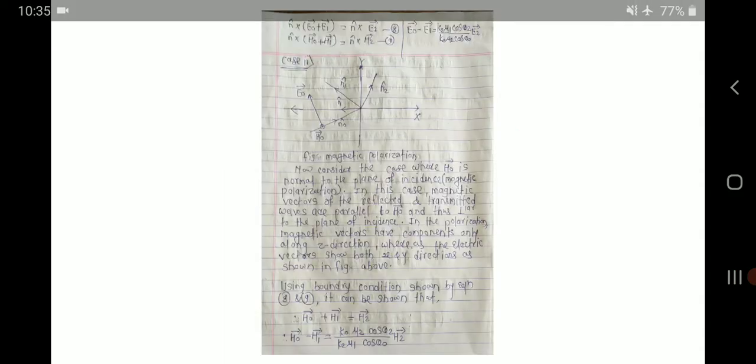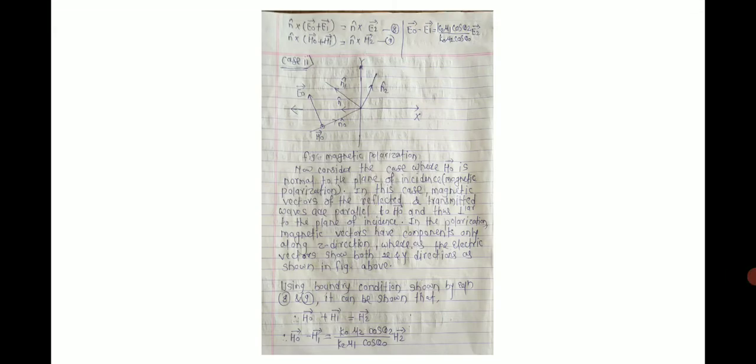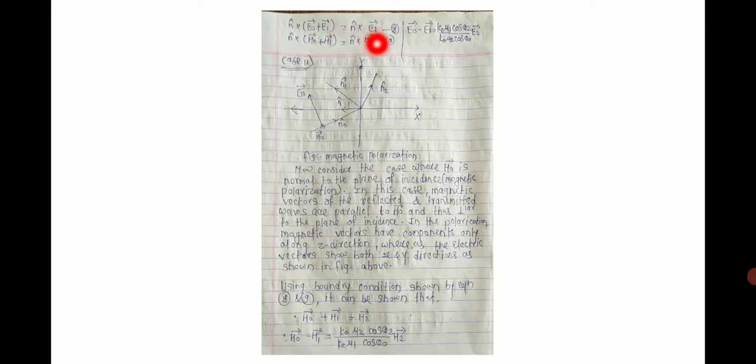In this video, we will discuss the next case — case 2, which is perpendicular polarization — and we have to find H0, H1, and H2. Let's see case number 2. First, let's recall the two boundary condition equations: equation number 8 and equation number 9. Equation 8: N-cap cross (E0 + E0-bar + E1-bar) = N-cap cross E2-bar. Equation 9: N-cap dot (H0 + H1) = N-cap dot H2-bar.